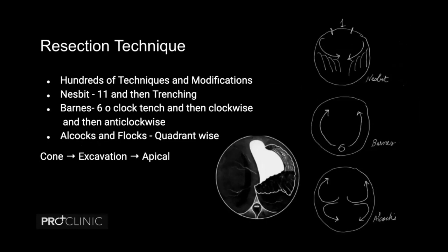Coming to resection techniques — we have to plan our resection. There are three common ways. Nesbit's technique: first make a resection from about 11 o'clock to 1 o'clock to cut the blood supply, causing both lobes to start to fall. You make a cup cut in the anterior part of the prostate, then go down on one lobe — usually the left lobe first — cutting from 1 o'clock to 3 o'clock. The lobe falls and loses vascularity, then you can do horizontal trenching movements and cut easily in a faster, bloodless fashion. Then you take the other lobe and lastly do the posterior 6 o'clock part.